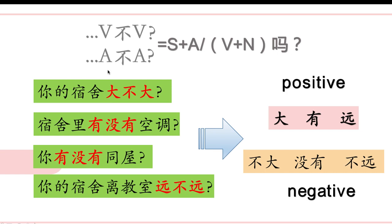Today's sentence structure equals the sentence pattern with 吗 from part one. For example: 你的宿舍大不大? = 你的宿舍大吗? 宿舍里有没有空调? = 宿舍里有空调吗? 你有没有同屋? = 你有同屋吗? 你的宿舍离教室远不远? = 你的宿舍离教室远吗?